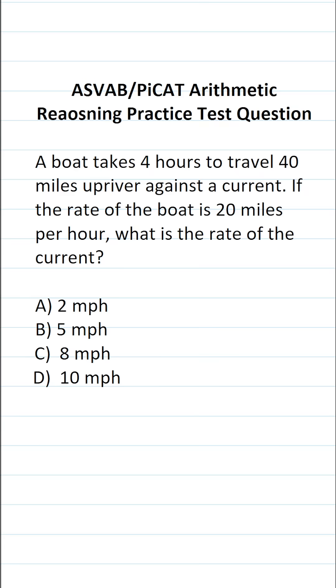This arithmetic reasoning practice test question for the ASVAB and PiCAT says: a boat takes four hours to travel 40 miles upriver against a current. If the rate of the boat is 20 miles per hour, what is the rate of the current?